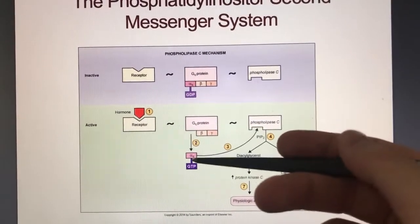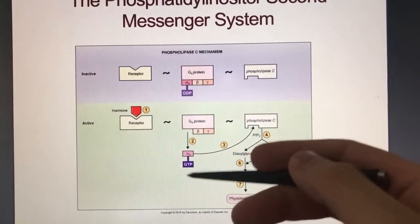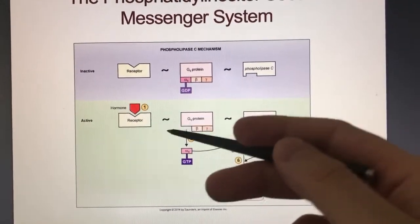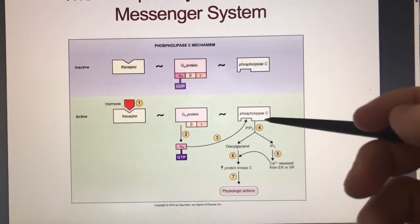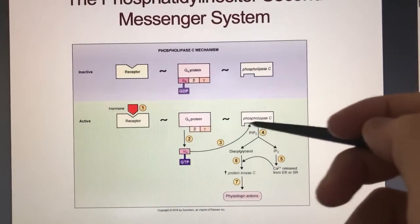So you get that active. The same thing is going to be GDP becomes GTP. So then when that binds, this changes to that. So that comes to phospholipase C. And when you get that active here.